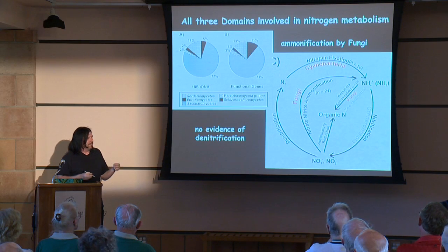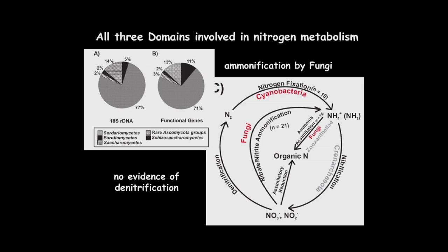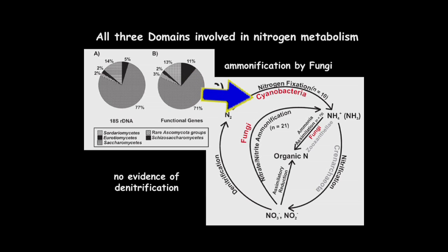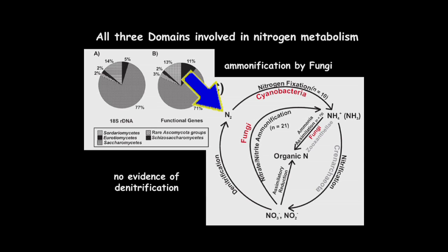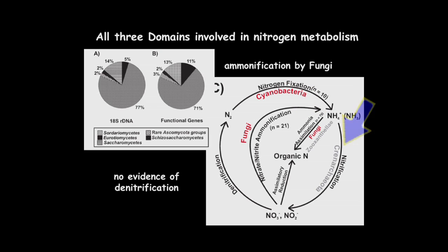Most coral reefs occur in nutrient-limited environments, and one of the main nutrients they're missing is nitrogen. Living on coral are cyanobacteria that can fix atmospheric nitrogen and make ammonia, which can then be denitrified by a different group of microbes called archaea. Instead of losing the nitrate and nitrite as gas, fungi change it back to ammonia — so they recycle it. This is all three domains of life working together to recycle nutrients within the coral holobiont. That's the good stuff — now I'm going to get into the depressing part.